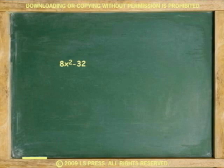Sometimes we have to factor more than once. We call this factoring completely, and it means that in some occasions factoring is not finished on the first try, and some more factoring should be done.